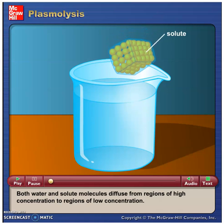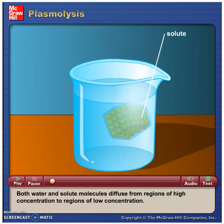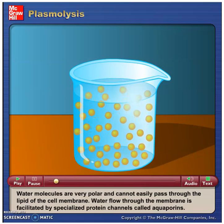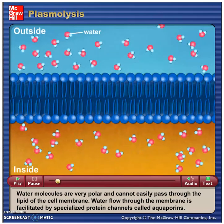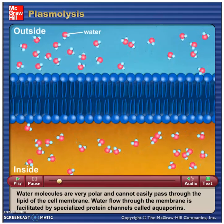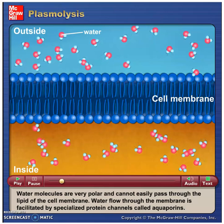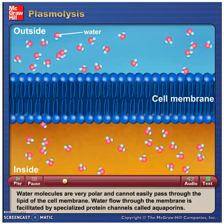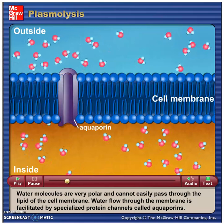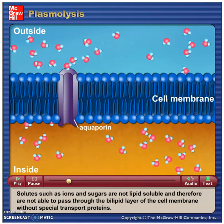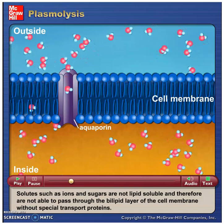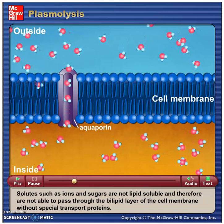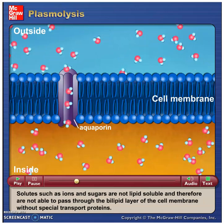Both water and solute molecules diffuse from regions of high concentration to regions of low concentration. Water molecules are very polar and cannot easily pass through the lipid of the cell membrane. Water flow through the membrane is facilitated by specialized protein channels called aquaporins. Solutes, such as ions and sugars, are not lipid soluble and therefore cannot pass through the bilipid layer of the cell membrane without special transport proteins.